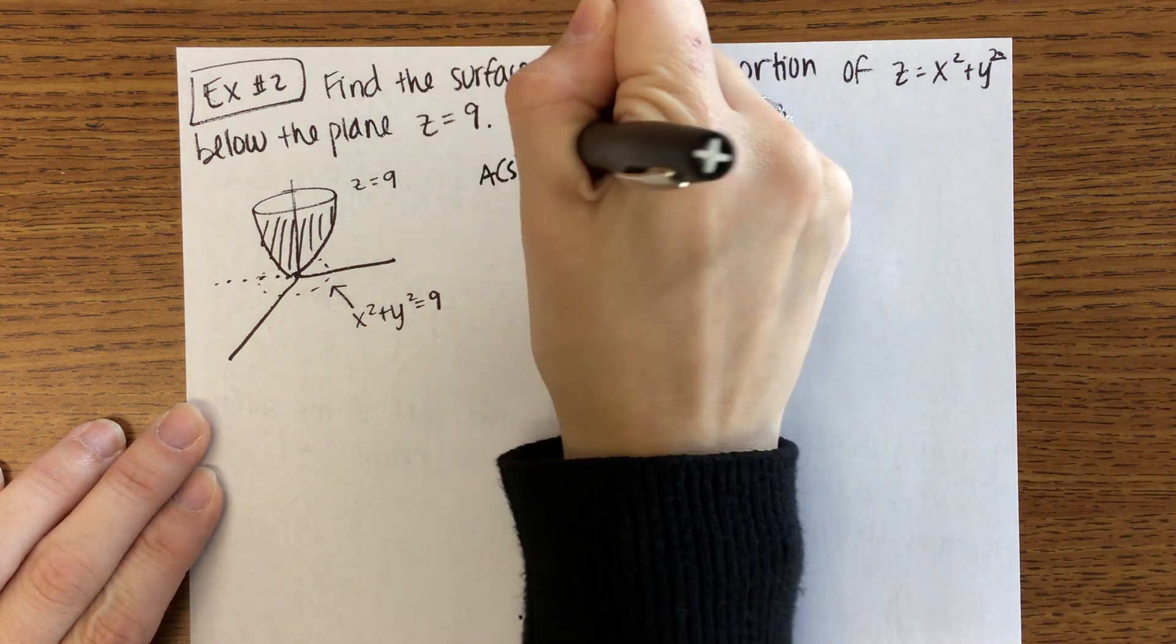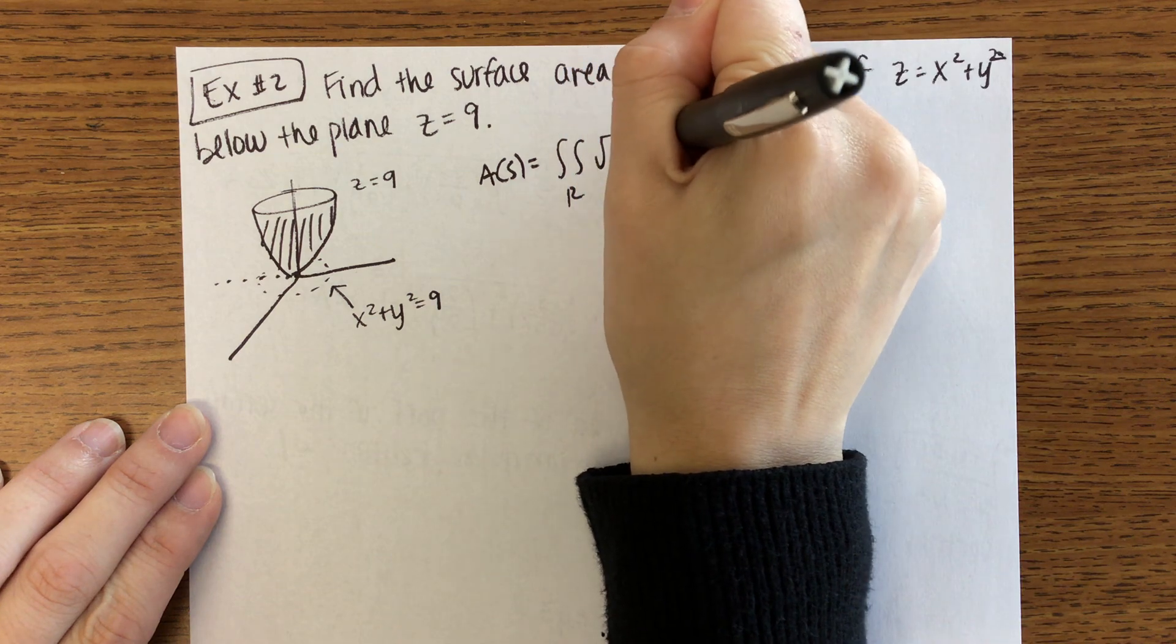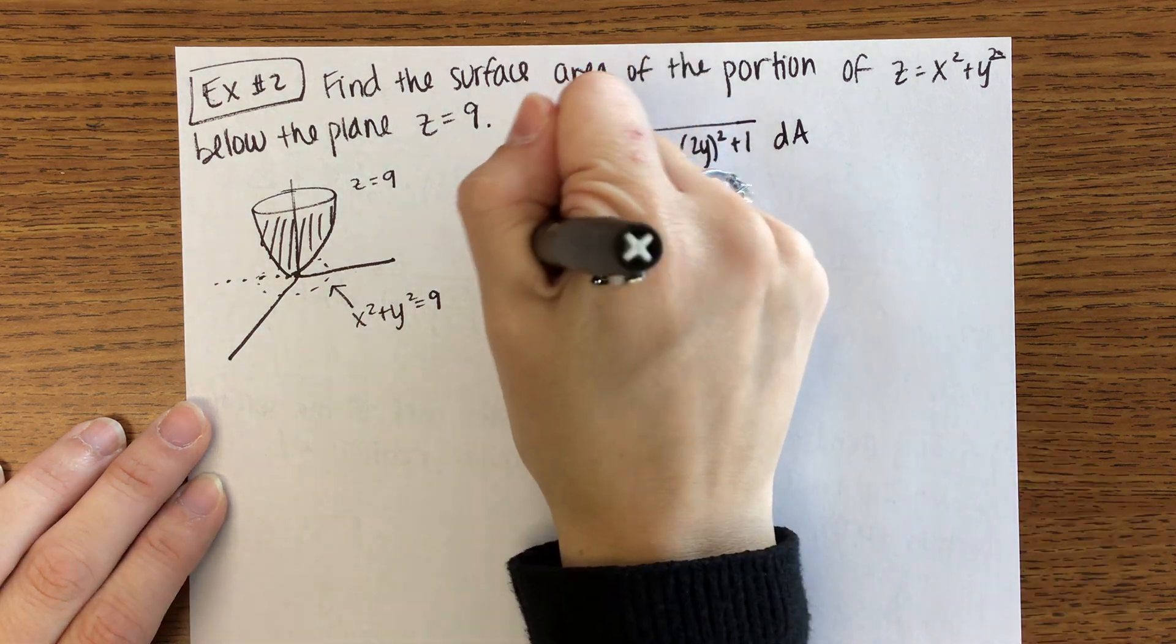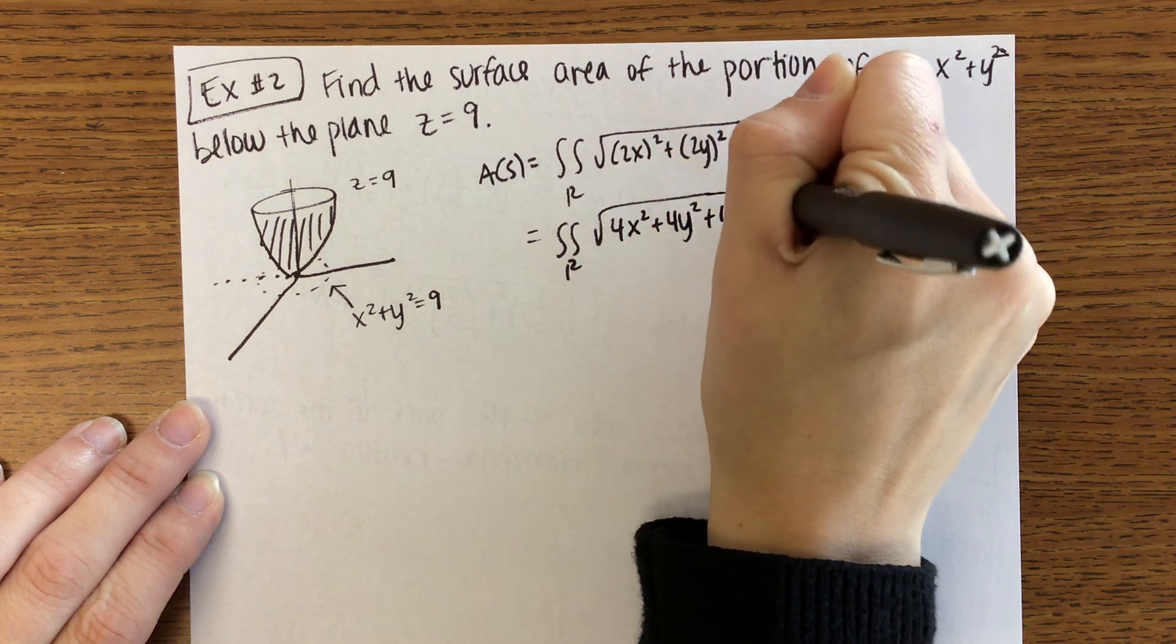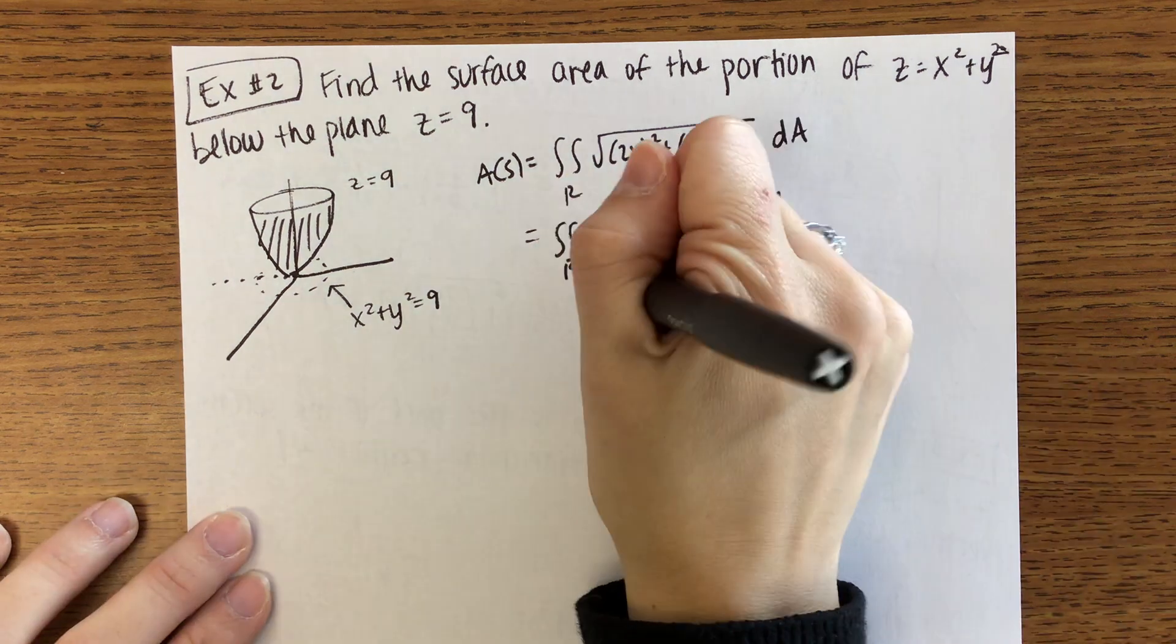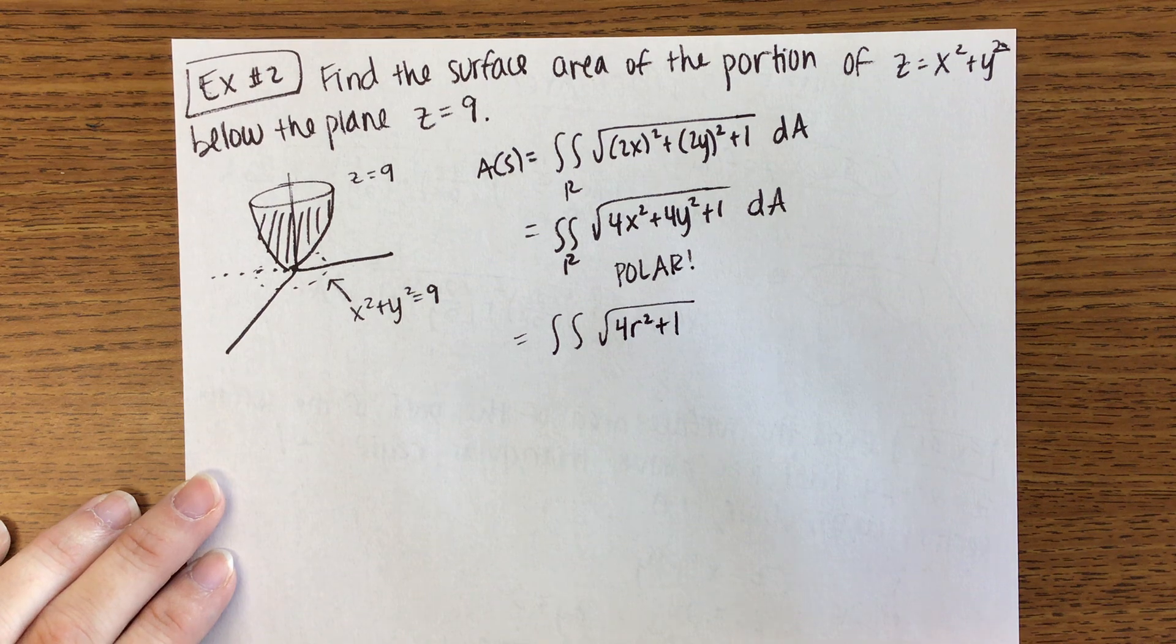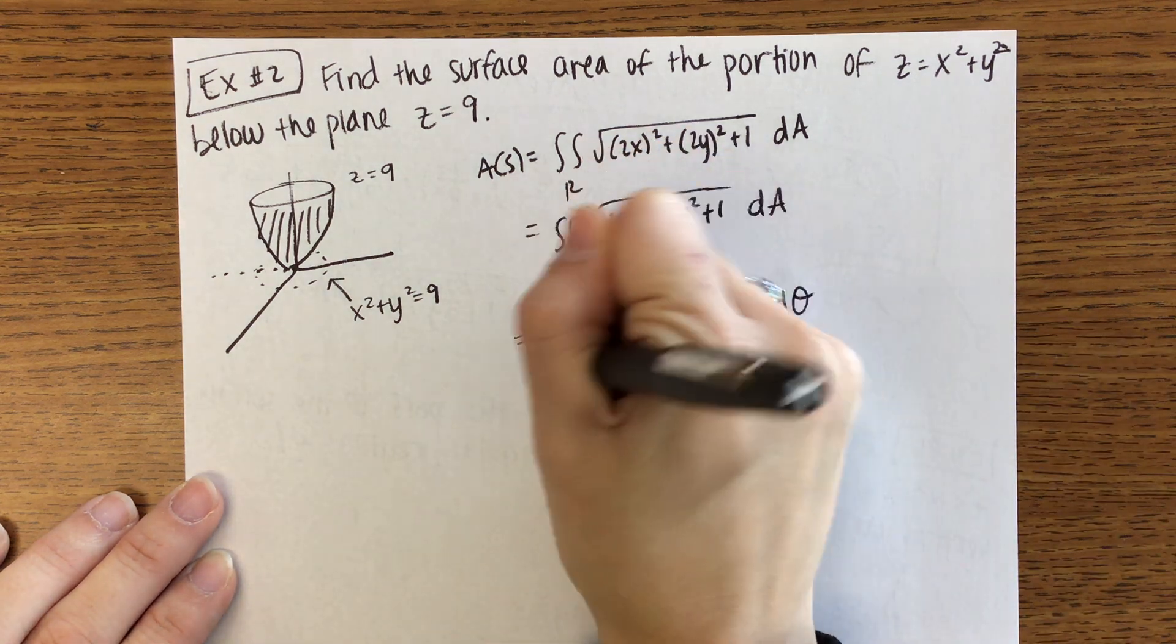Okay so then it's going to be a double integral over that region R. First partial with respect to X will be 2X. First partial with respect to Y will be 2Y, plus 1. So that'll simplify to 4X squared plus 4Y squared plus 1. Do we have any suggestions? Polar, yeah. So this will be the square root of 4R squared plus 1 and then remember you're going to have the R DR d theta. R in this case goes from 0 to 3, theta goes from 0 to 2 pi and those are based on the circle.